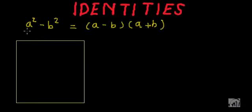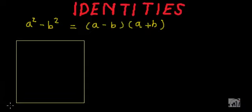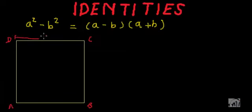Today we will learn how the identity a² - b² = (a - b)(a + b) can be understood geometrically. I have already drawn one square and let me name it as A, B, C, and D. ABCD is a square of dimension A, meaning its one side is of length A.